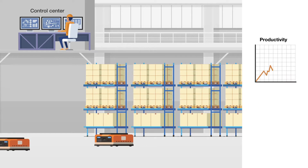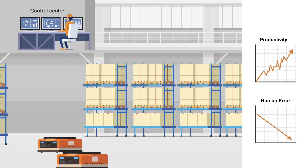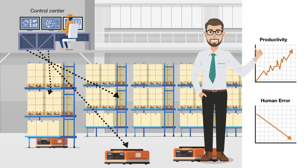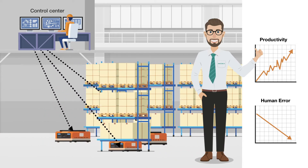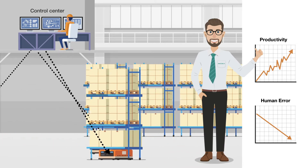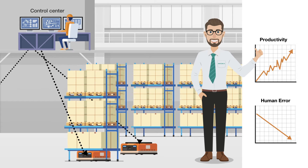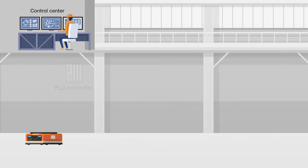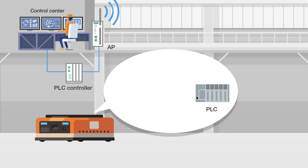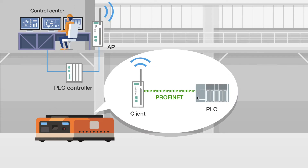AGV systems enhance productivity and reduce human error. For smooth system operations, control centers need to transmit data to moving shuttles with uninterrupted connectivity. To receive data from the control center and forward it to the PLC in real time, a wireless client is installed on each shuttle system.